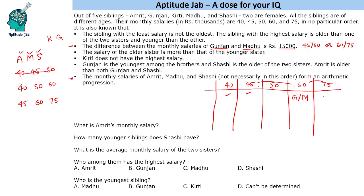Now let's take the case of 45, 60 and 75 for Amrit, Madhu and Sashi. The reason we test this next is that 60 is already identified as one of Gunjan or Madhu. If Madhu is at 60 and both 45 and 75 are occupied by Amrit and Sashi, there is no valid salary left for Gunjan, since Gunjan must be at 45 or 75. So we cannot have both Gunjan and Madhu with valid salaries in this case. This case is also not possible.